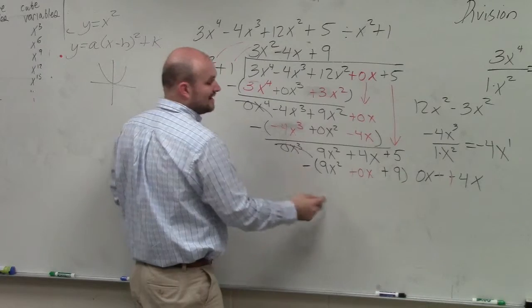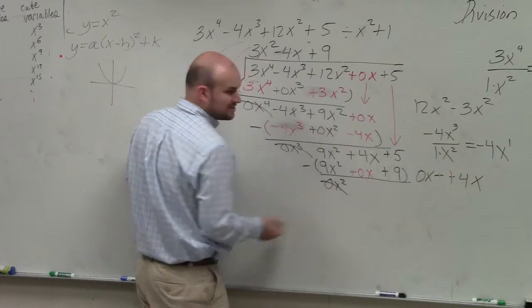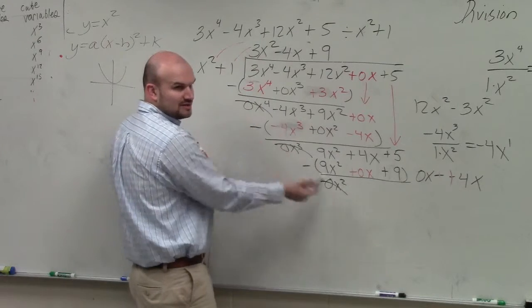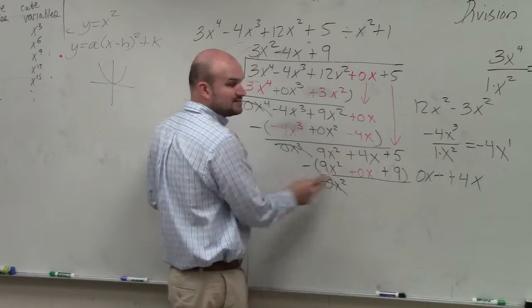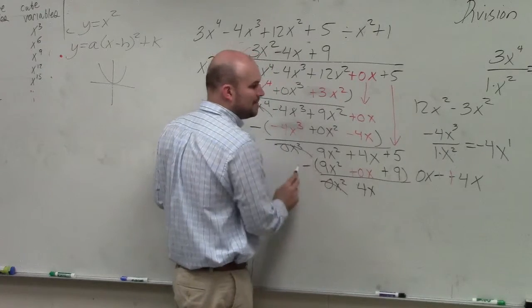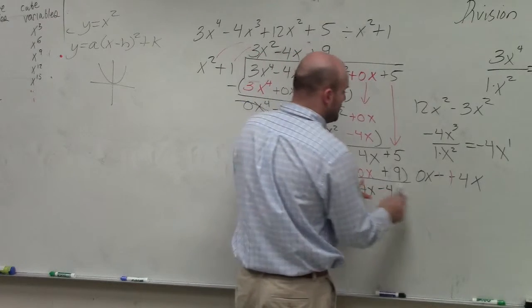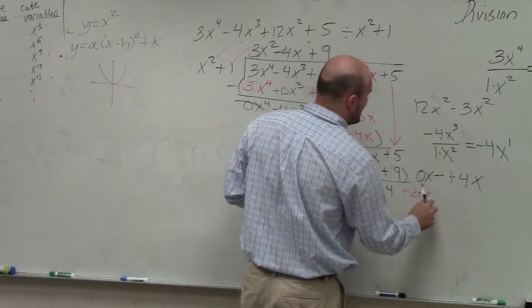And then I subtract the rows. 9x squared minus 9x squared is going to be 0x squared. Do you guys notice how that first term always goes to 0? 4x minus 0x is 4x. And then 5 minus 9 is negative 4. So therefore, this is now my remainder.